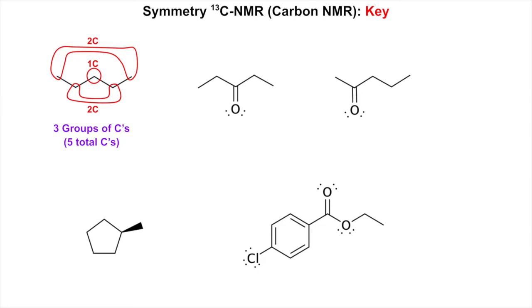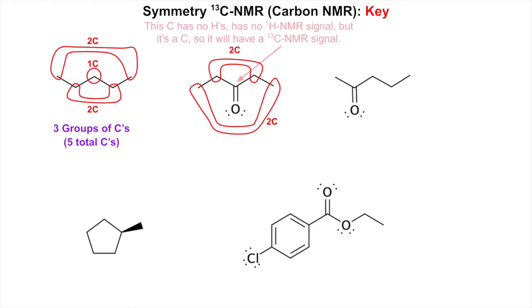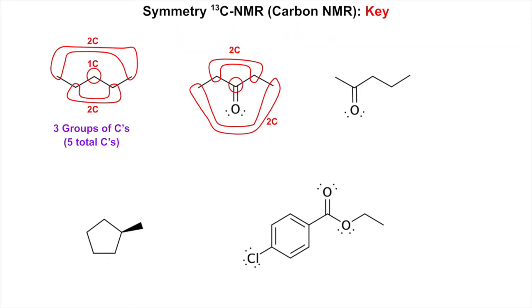Next up, the ketone — this is 3-pentanone. The outer methyl carbons are equivalent, giving a two-carbon signal. The inner carbons are also equivalent, another two-carbon signal. Now this carbonyl carbon has no hydrogens on it, so it had no proton NMR signal, but it is still a carbon, so it will have a carbon NMR signal — a one-carbon signal. That gives us three groups of carbons, five total carbons.